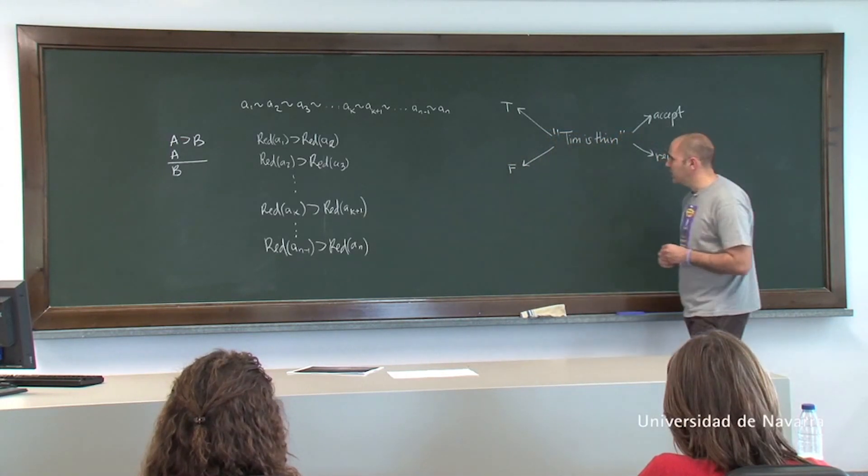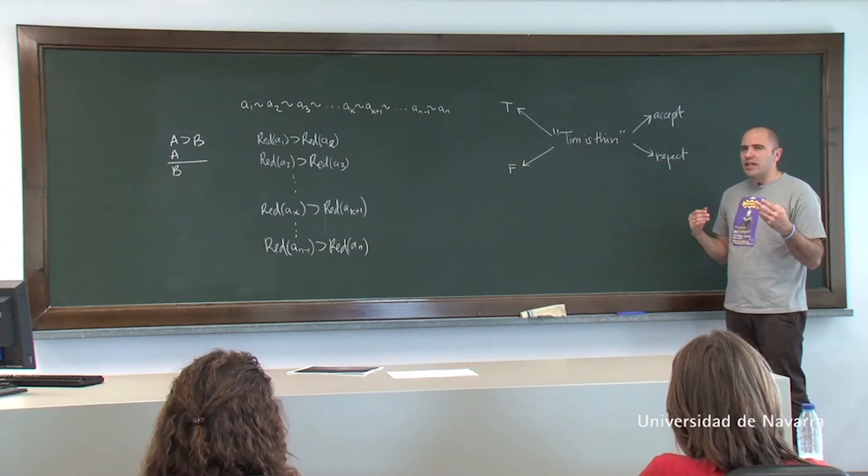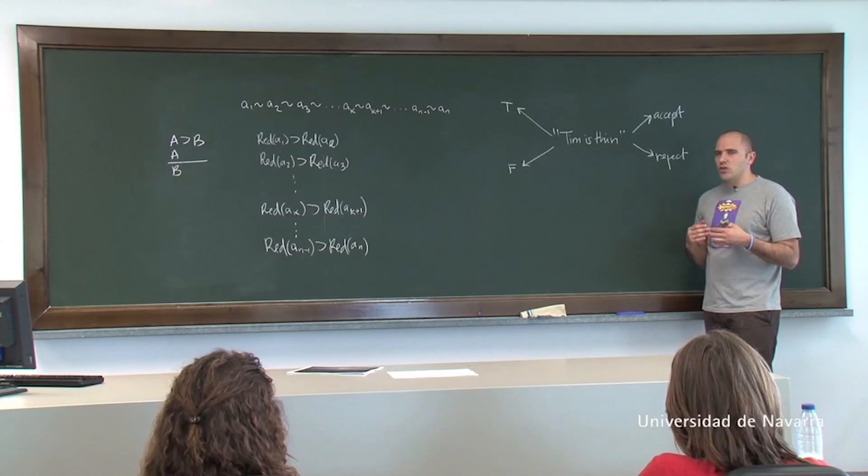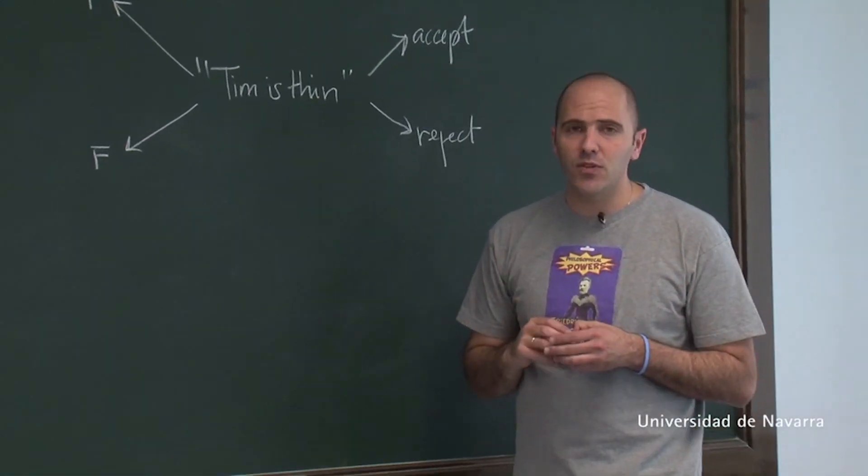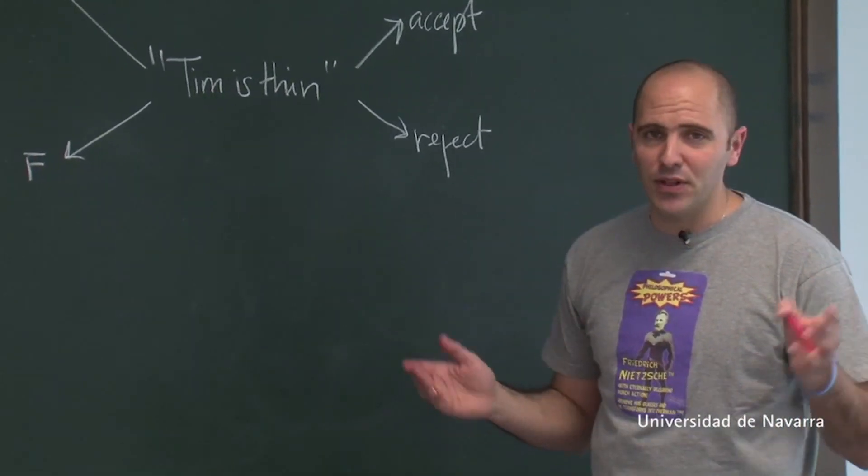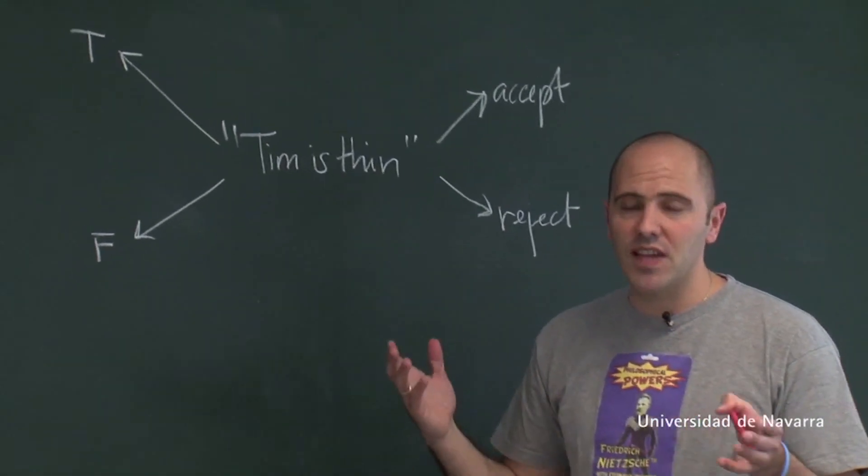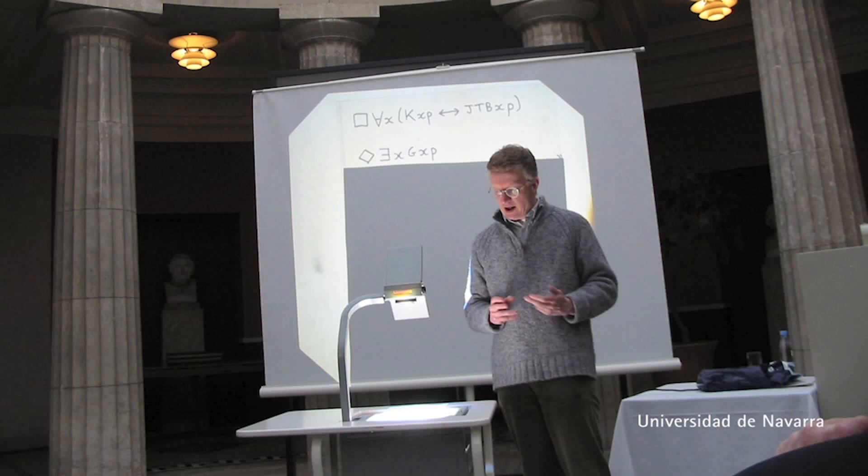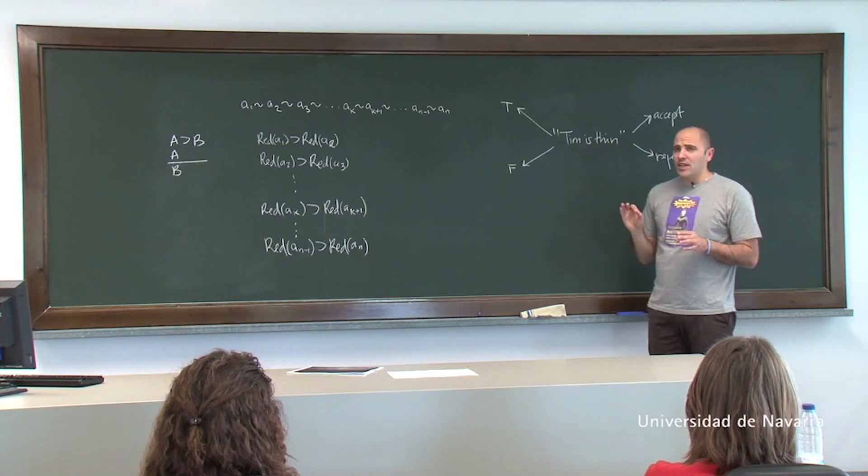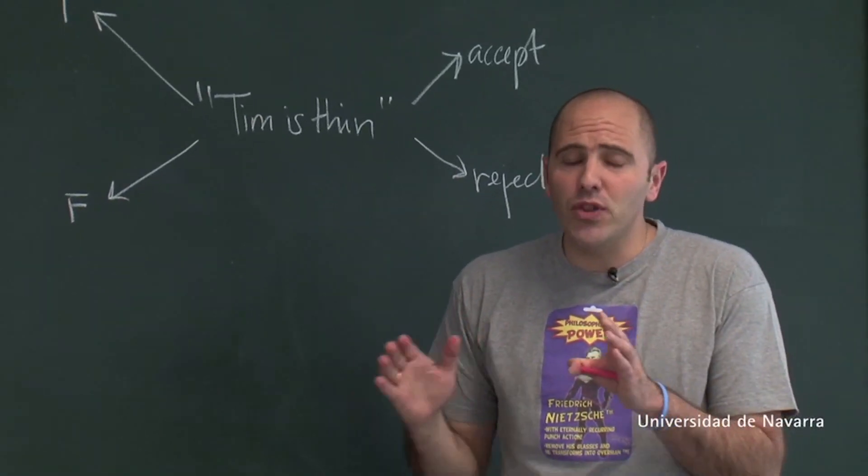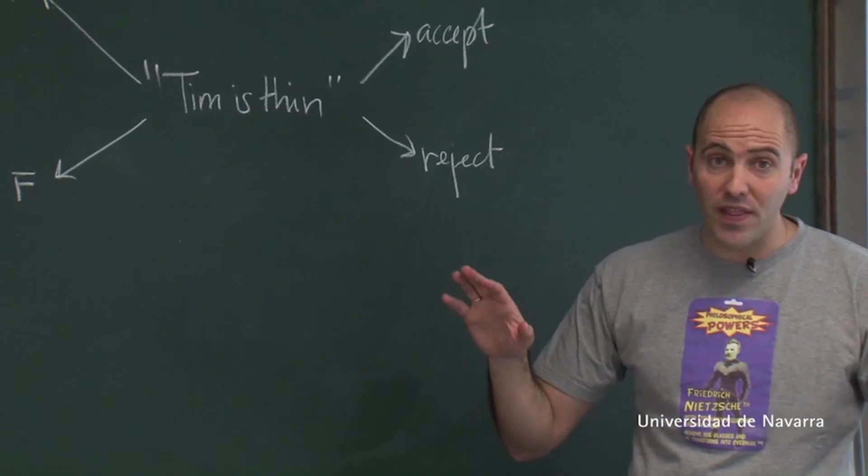Now the second thing I would like you to consider is something related to what is called borderline cases. So take the example of Tim. This is like a classical example in the literature. So Tim Williamson is thin. Well, Tim Williamson is clearly thin. But I don't know why he puts the example. Tim Williamson is thin.